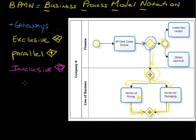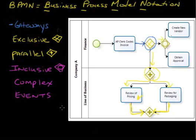The other types of gateways in the notation are complex gateways and event-based gateways, which deal with other types of conditions and circumstances. You can see that BPMN notation allows a lot of complexity and control over how the process should branch and flow by using these various gateways.